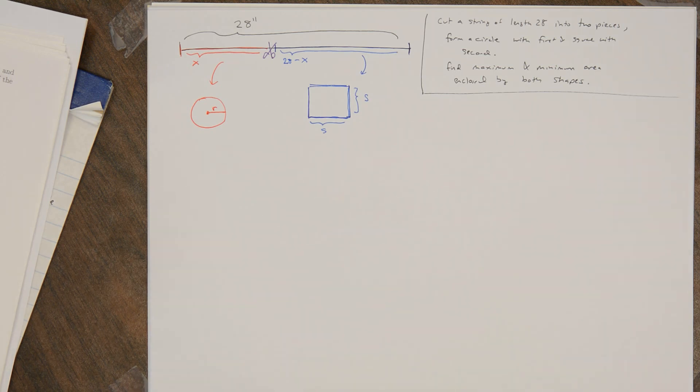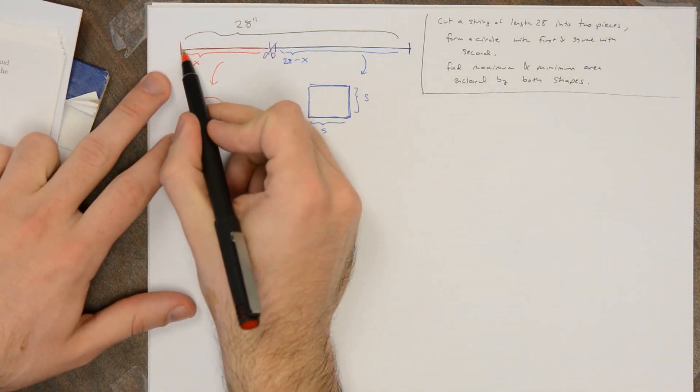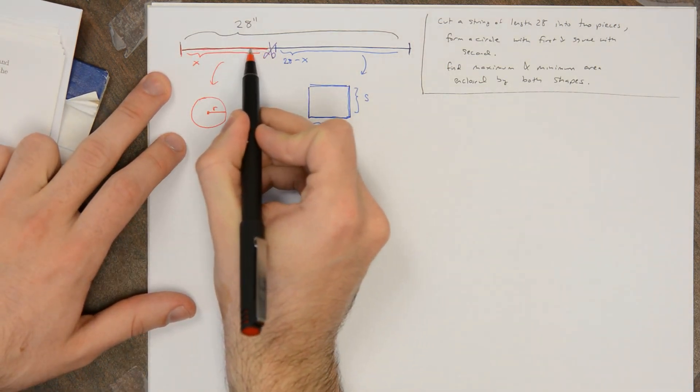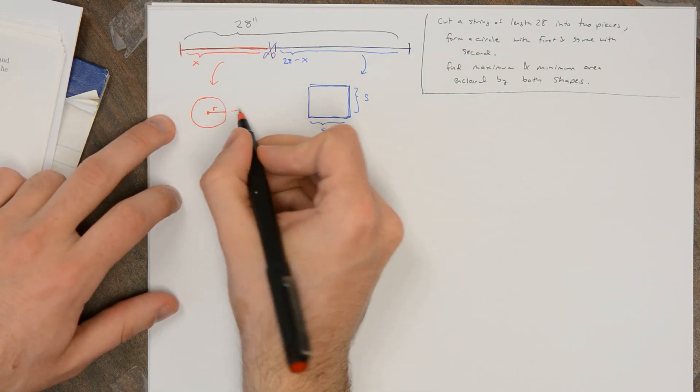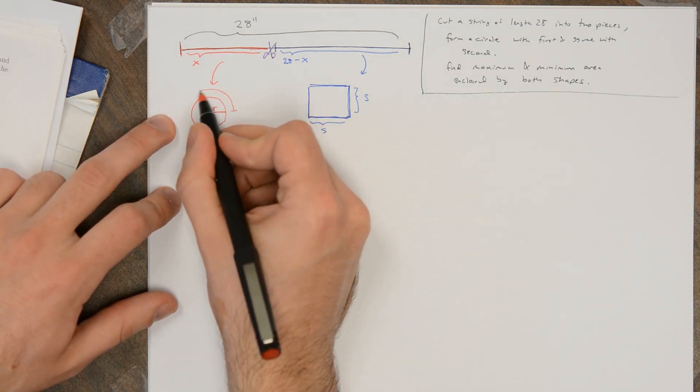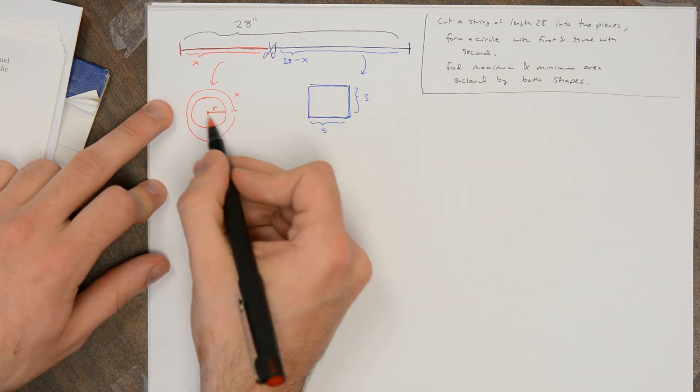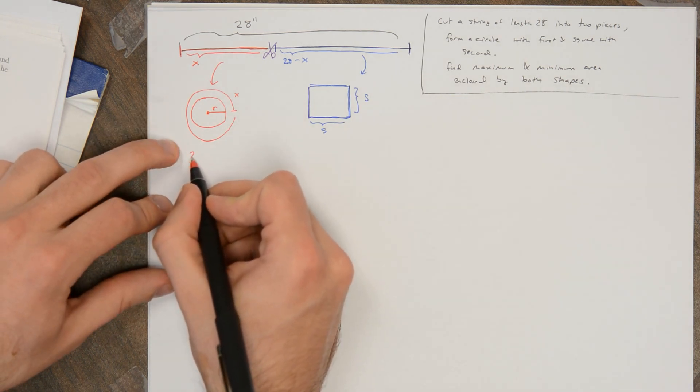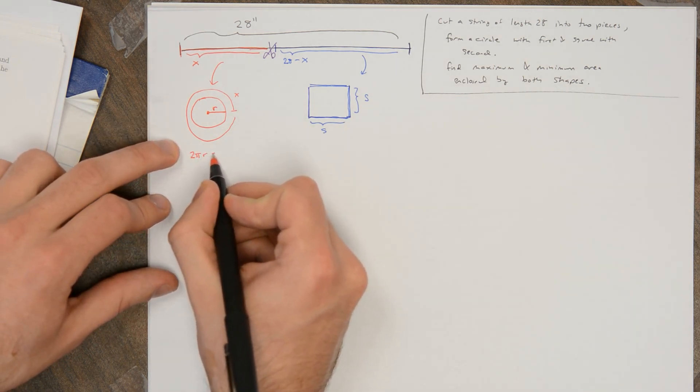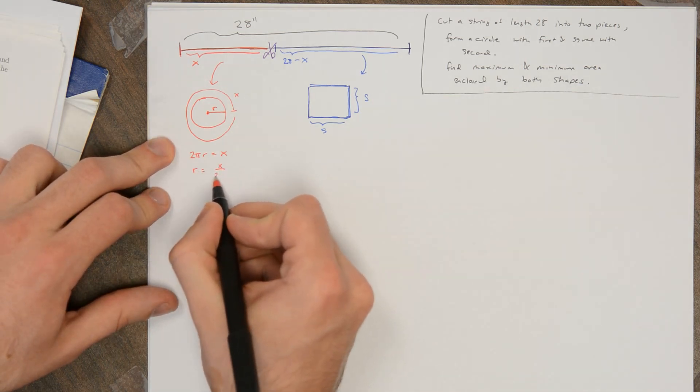Right? So this red piece of string that I use for the circle, x ends up being the circumference of the circle. So that's x. So whatever this radius r is, x is 2πr. So r is going to be x over 2π.